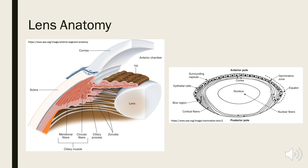The lens is a biconvex clear crystalline structure that focuses images on the retina. It's suspended by filamentous zonules from the ciliary body between the iris anteriorly and the vitreous posteriorly. Contraction of the ciliary muscle leads to relaxation of the zonules, which allows the lens to become more spherical. As the axial thickness of the lens increases, the refractive power also increases, allowing the eye to change focus from distant to near objects through a process called accommodation.